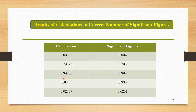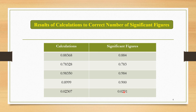The next calculation is 0.98350 — the third digit is 3 and the next digit is 5, which is ≥5, so we add 1 to get 4, giving the significant figure 0.984. The next number is 0.8999 — the fourth digit is 9, so we add 1 to the third digit, giving the significant figure 0.900. The last calculation is 0.02307 — the fourth digit is 7, so the significant figure is equal to 0.0231.